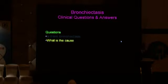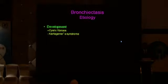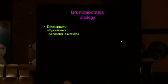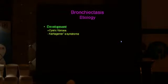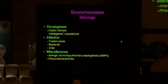Once we've picked up bronchiectasis, the next step is to identify the etiology. The commonest cause in the developing world or in a country like India is post-infectious, usually following viral infection in childhood, causing destruction of the bronchial walls. The second commonest cause in India would be tuberculosis. In the developed world, causes include cystic fibrosis, Kartagener's or the immotile cilia syndrome, ABPA, and rheumatoid arthritis or other connective tissue diseases.